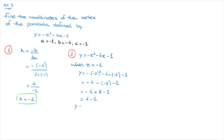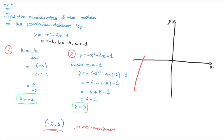So the y-coordinate of the vertex is equal to 3. We can now state the final answer: this parabola's vertex has coordinates negative 2 and 3. We can confirm this by looking at the parabola's curve. The coefficient a is negative, so this vertex is a maximum point, and the curve has a maximum point with coordinates negative 2 and 3. That's how we find the coordinates of a parabola's vertex — the maximum or minimum point.